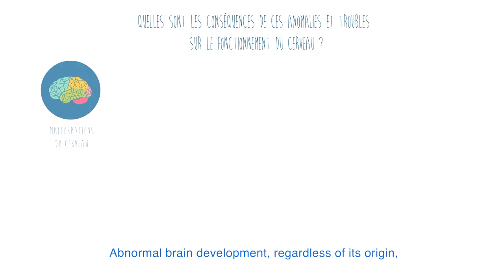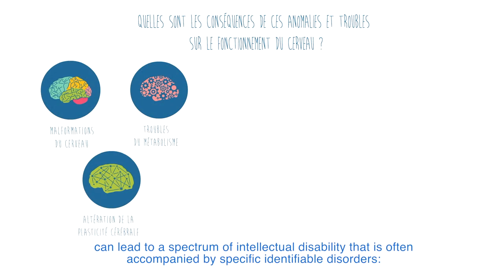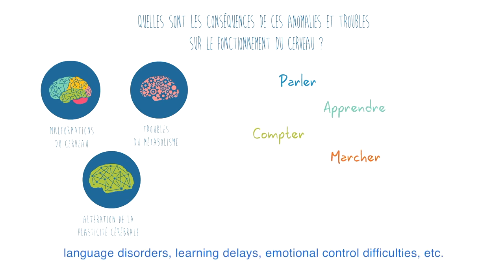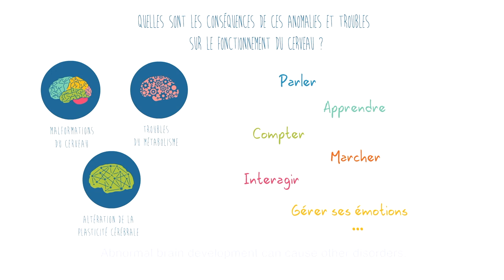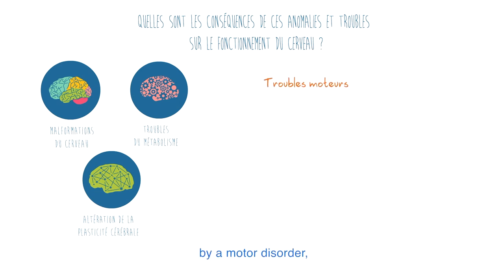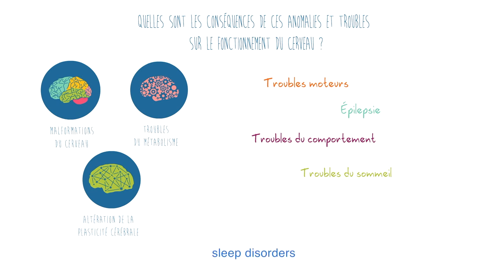Abnormal brain development, regardless of its origin, can lead to a spectrum of intellectual disability that is often accompanied by specific identifiable disorders: language disorders, learning delays, emotional control difficulties, etc. Abnormal brain development can cause other disorders as well. Intellectual disability can be accompanied, for example, by a motor disorder, epilepsy, behavioral disorders, sleep disorders, or eating disorders.